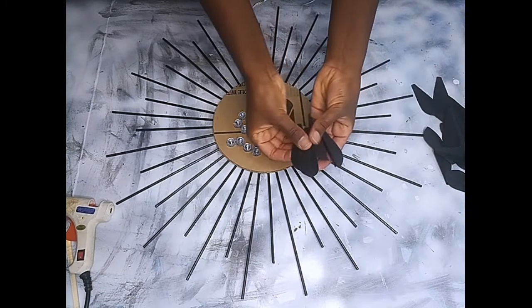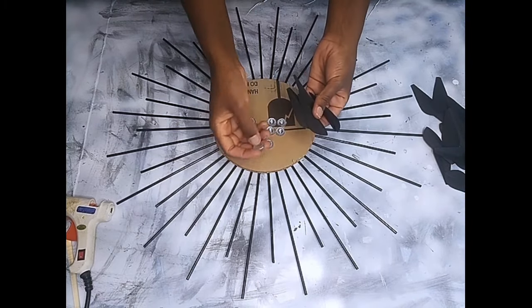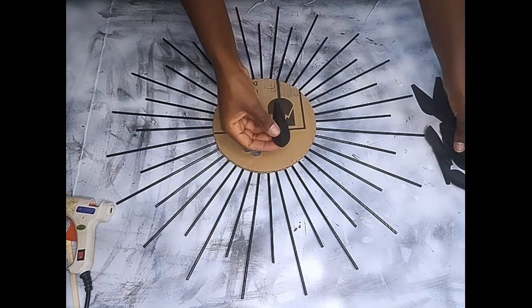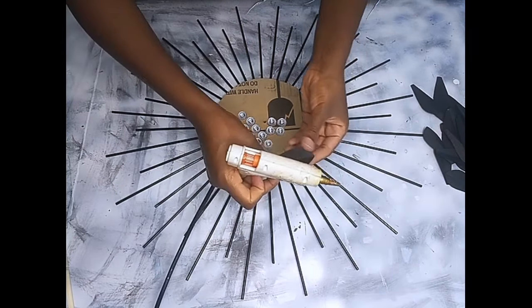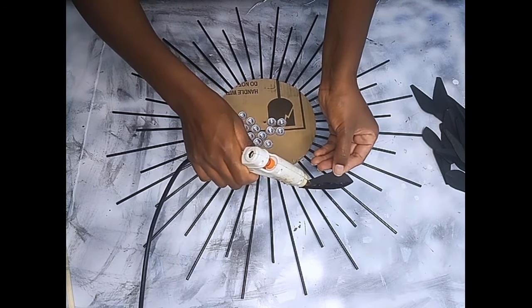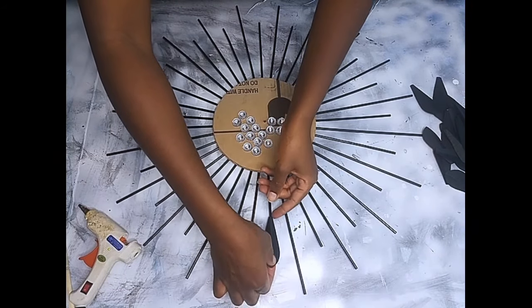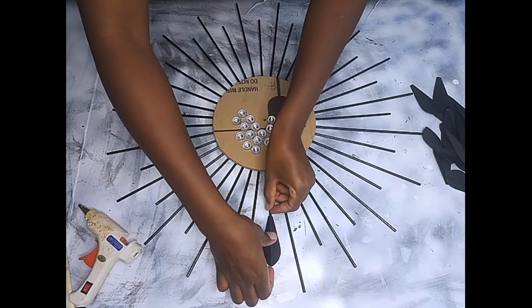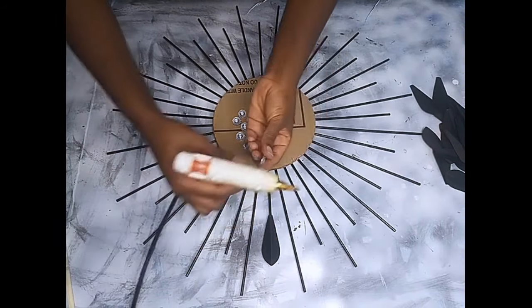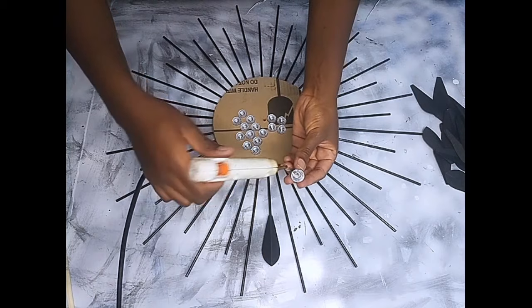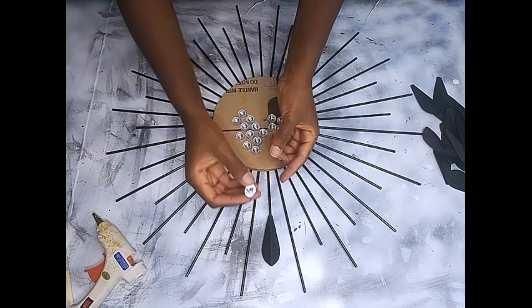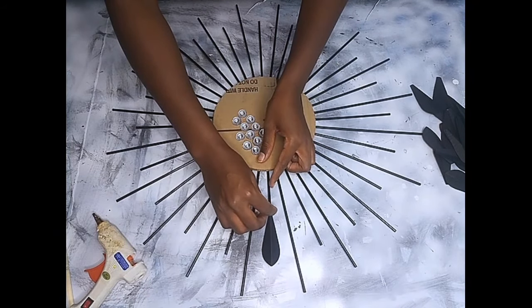This is the fun part of the project. I'll be gluing down this decoration on my wall clock. I'll glue them down one at a time on my skewers using hot glue. This is the pattern that I used for my project. You can also use a different pattern depending on how you'd like your watch to look like.